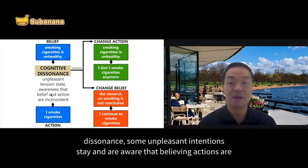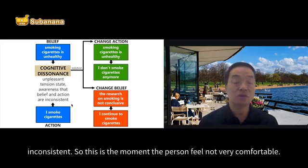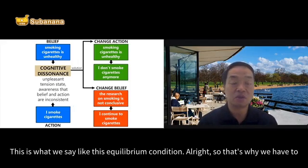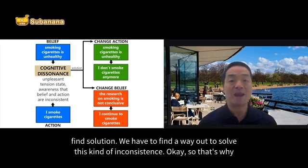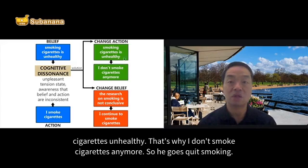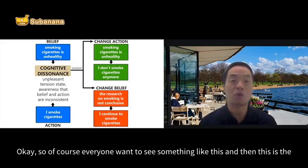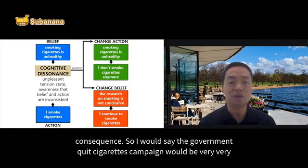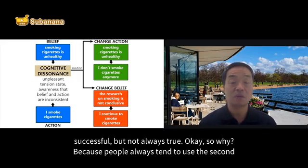The person feels uncomfortable — this is an unpleasant state where they are aware their actions and beliefs are inconsistent, an disequilibrium condition. So they have to find a way out. One solution is to change their action: 'Smoking cigarettes is unhealthy, so I don't smoke anymore' — they quit smoking. Of course everyone wants to see this outcome, and if this always happened, government quit-smoking campaigns would be very successful.